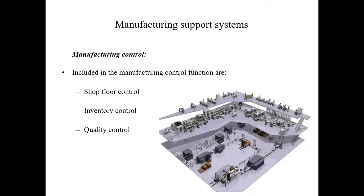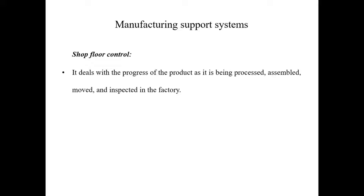In manufacturing support systems, we have another category known as manufacturing control. Manufacturing control has three different functions: shop floor control, inventory control, and quality control. Shop floor control deals with monitoring the progress of the parts and products as they are being processed, assembled, moved, and inspected throughout the factory.